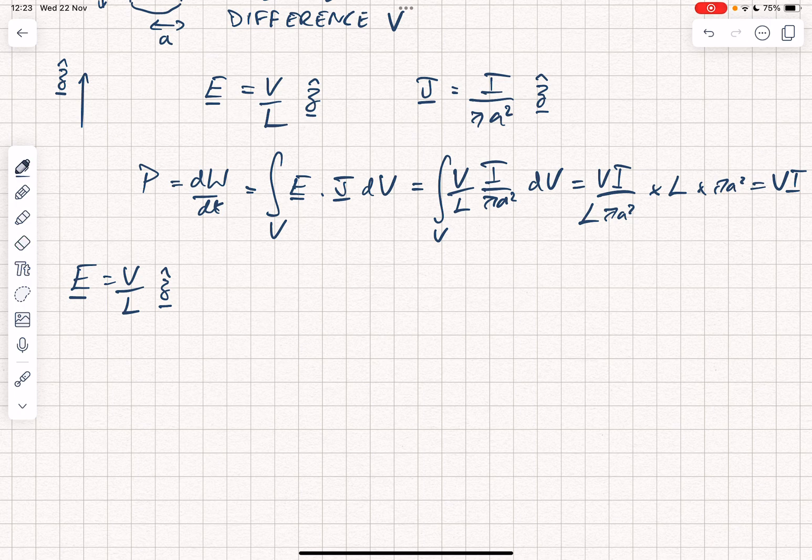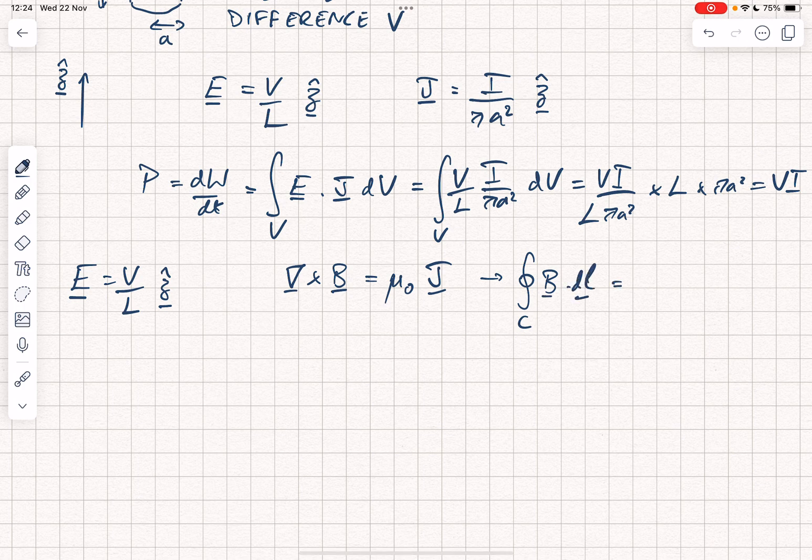Well, the magnetic field we can derive using Ampere's law. So we've got curl B is equal to mu naught J. If we put a circular surface, which is crossing the wire, then we can rewrite that as the closed loop integral of B dot DL. That's using Stokes' theorem is equal to mu naught times the surface integral of J dot DS. The surface integral of J dot DS is simply equal to the current.